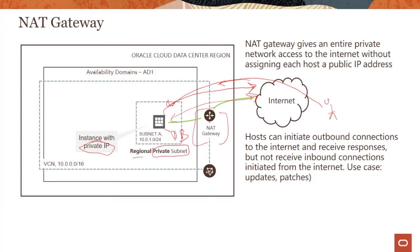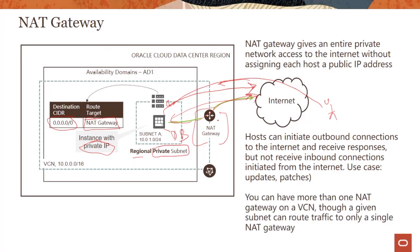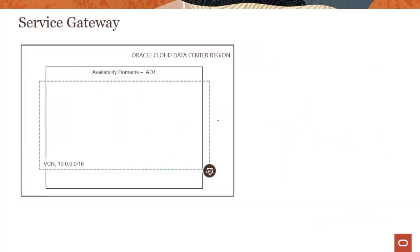It's a managed service, so high availability and bandwidth are taken care of — you don't have to manage those yourself. The route table rule says all packets destined for any IP address should go through the NAT gateway, so all traffic from the private subnet goes to the NAT gateway, and patches or updates come back through it. You can have more than one NAT gateway on a VCN, though a given subnet can route traffic to only a single NAT gateway.